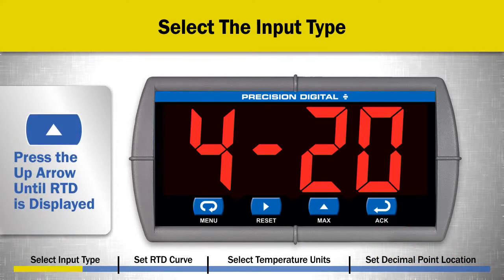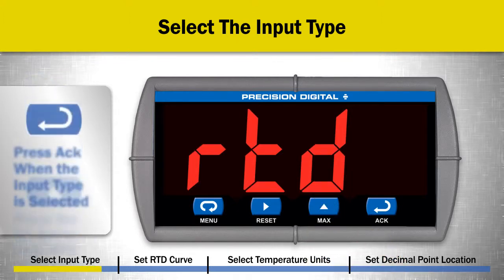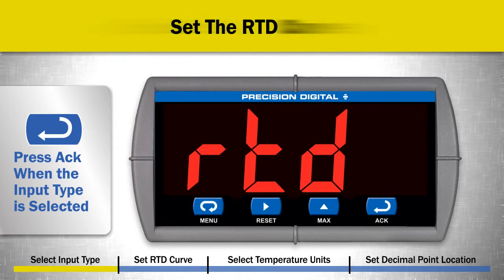Press the up arrow button multiple times until RTD is displayed to select an RTD input. Press ACK when this input type is selected.